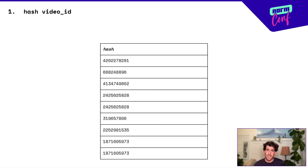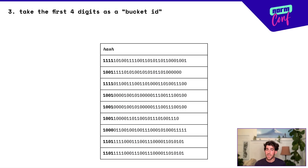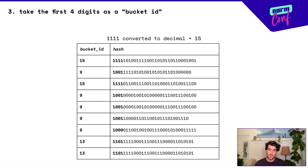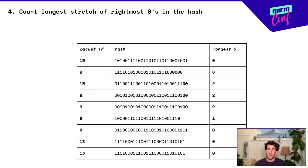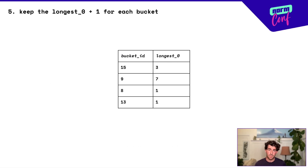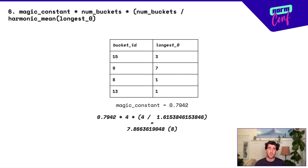We're going to count video IDs. First, we hash them. Then we convert to binary. We take the first four digits of this binary number as a bucket ID and convert back to decimal for simplicity. Then we count the longest stretch of rightmost zeros in the hash. The premise is that this is unlikely to be very long probabilistically, so if you see a bunch of really long ones, you probably have a huge dataset for that to happen statistically. We keep that number, add one so that none is zero. Then we apply this formula: a magic constant multiplied by the number of buckets squared, over the harmonic mean of that longest stretch of zeros. And this gives us the cardinality — here we got eight, it's actually nine, which is pretty good.